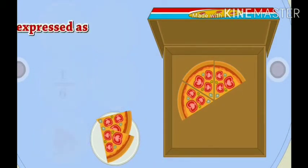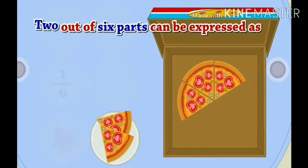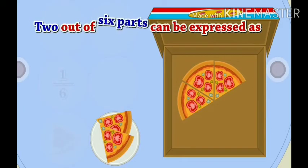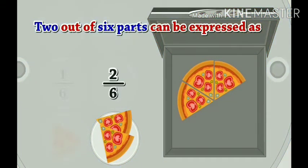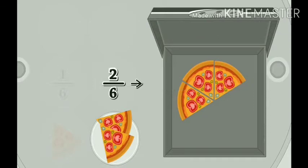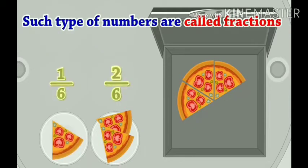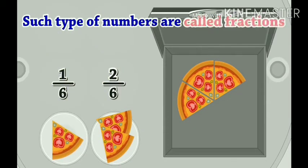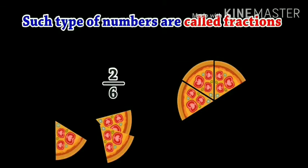If we put two parts out of six, then that part is expressed as two upon six, and we read it as 'two sixths.' Such types of numbers are called fractions. One upon six is a fraction, two upon six is a fraction.